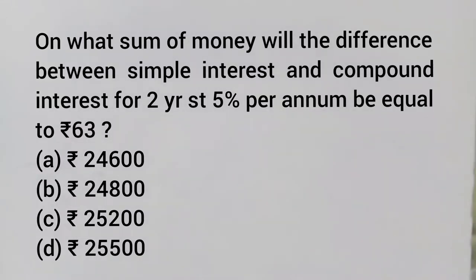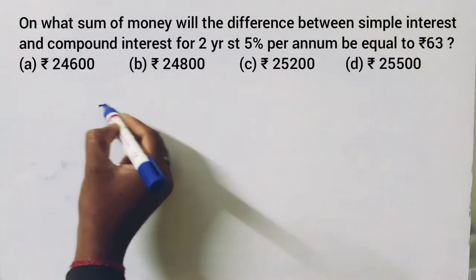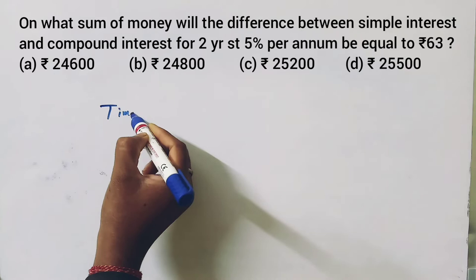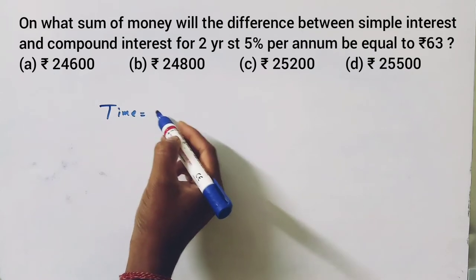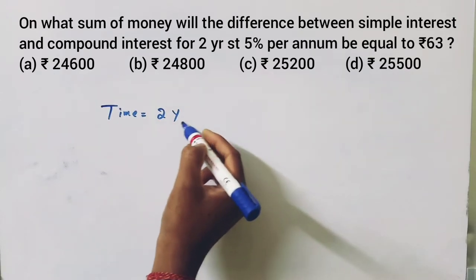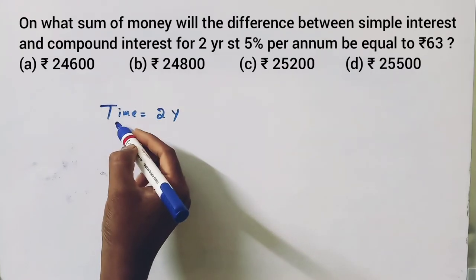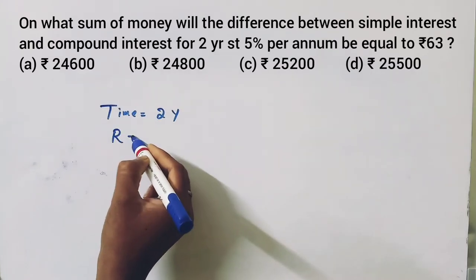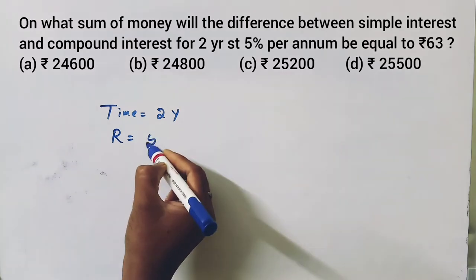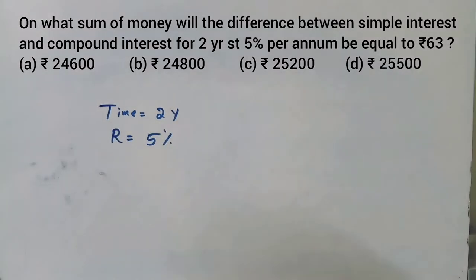On what sum of money will the difference between simple interest and compound interest for 2 years at 5% per annum be equal to 63? Okay, so time is 2 years, then rate of interest is 5%, compound interest.